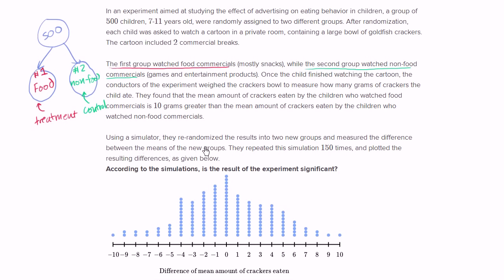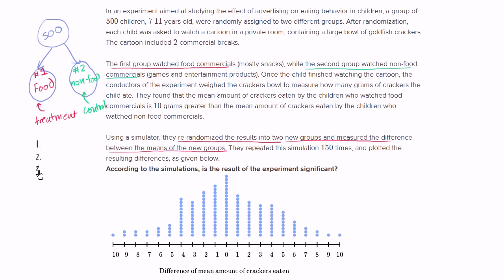The way you do it is what they do right here. Using a simulator, they re-randomized the results into two new groups and measured the difference between the means of the new groups. They repeated the simulation 150 times and plotted the resulting differences. So they took the same 500 children — child one, two, three, all the way up to 500 — and for each child they already had measured how many grams of crackers they ate.